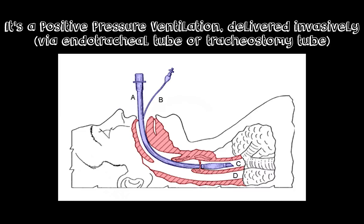We're delivering gas invasively via endotracheal tube or a tracheostomy tube. In this picture, you see an endotracheal tube being placed in the trachea. One thing you have to understand is we are bypassing the upper airway, and whenever you're bypassing anatomical structures, there are inherent risks and deleterious effects. For example, the upper airway is used to warm, humidify, and purify air. If you're bypassing that, you have to introduce adjuncts such as a heat-moisture exchanger to accommodate for that. In addition, because it's invasive, we have all types of problems associated with that, such as ventilator-acquired pneumonia and other complications.